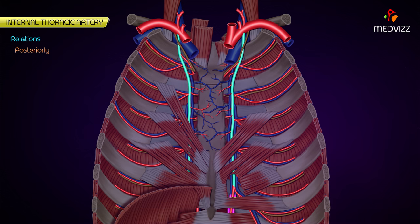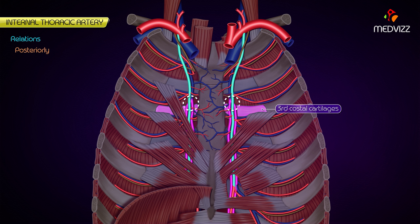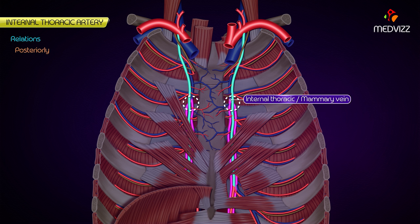The internal mammary artery is accompanied by two venae comitantes, which unite at the level of the third costal cartilage to form the internal thoracic or mammary vein. This vein runs upwards along the medial side of the artery to terminate into the brachiocephalic vein at the root of the neck.